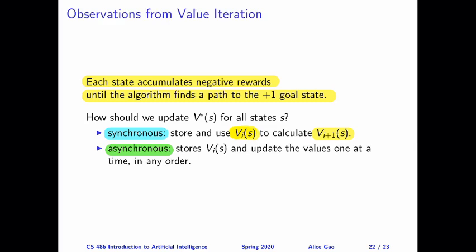There's also an asynchronous version. The asynchronous version says we do not have to sweep through all states for one full iteration before moving on to the next. We can update the values for all states at any time, in any order. It doesn't matter whether we've updated one state more frequently than another. Eventually, if we perform updates for all states infinitely often, we are guaranteed to converge to the optimal values.